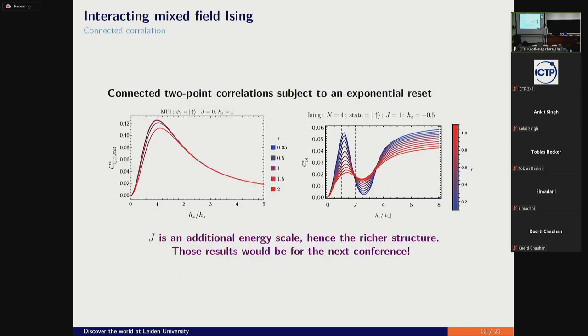Okay, so this is the dependence of the maximum of the peak on the reset rate. You see there is enhancement of those correlators at some reset rate. Good. And here is an interacting system, but I won't present this. It's on the right side. You see you get much richer structure when you turn on interaction because there is another energy scale that appears and gives rise to interesting things. But that will be for some other conference, I guess.